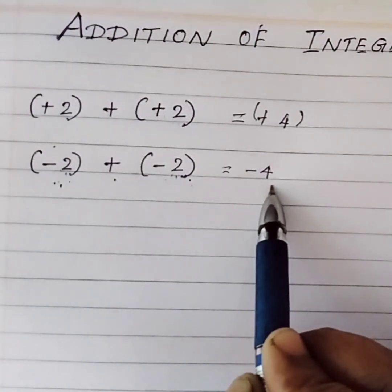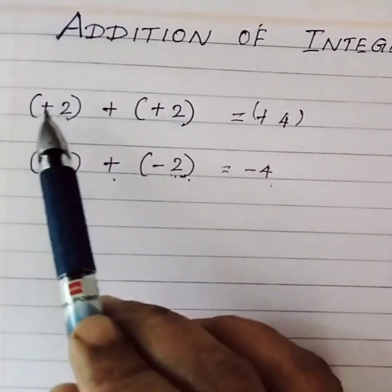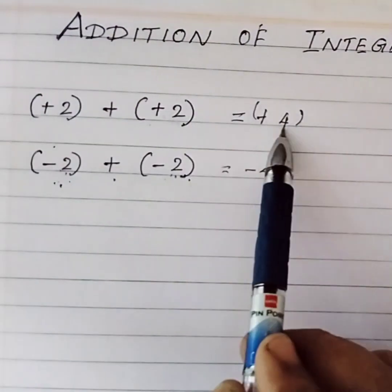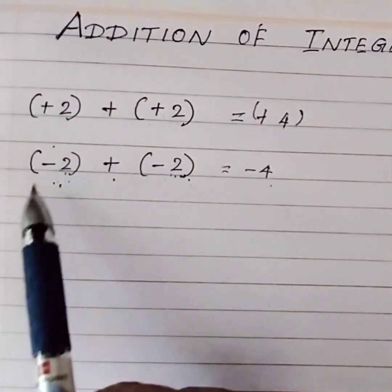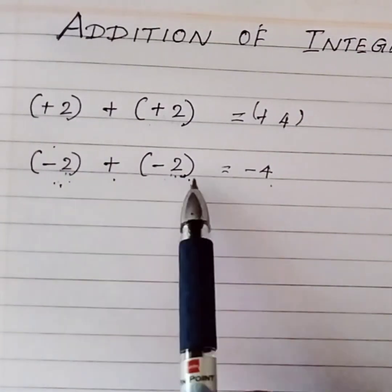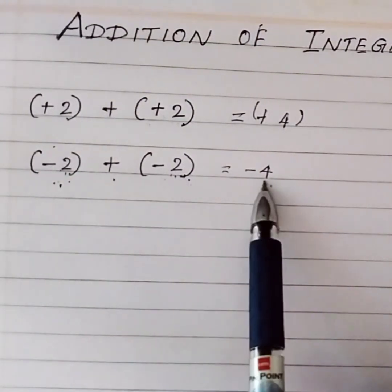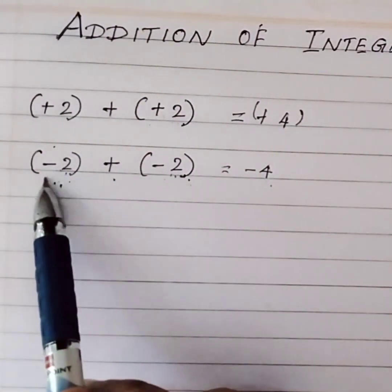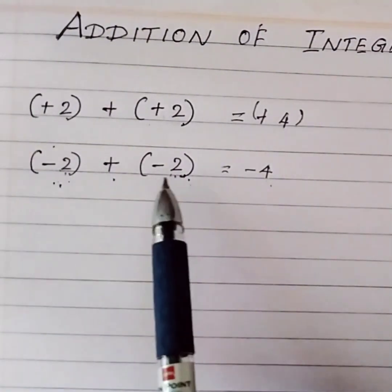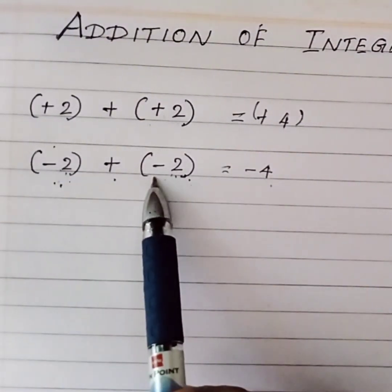Let me revise this again. In both sums, the signs are the same, so we add the numbers and place the sign with the answer. 2 plus 2 is 4. In the first one we had plus and wrote +4. In the second question, (-2) + (-2), we write it as -4.